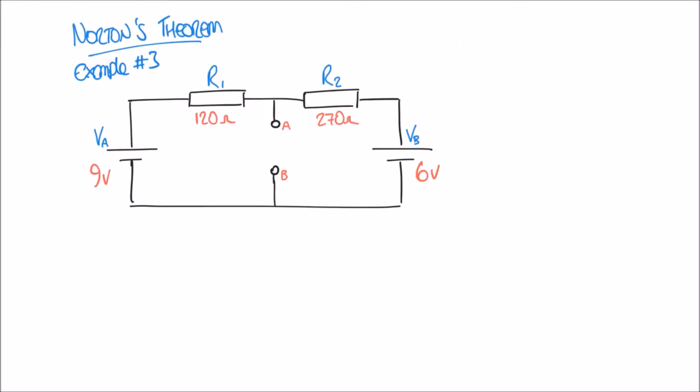In this third and final video on Norton's Theorem, we're going to look at one more example of how we can use the theorem to simplify circuits. The example before us is slightly more complicated by the fact that we now have two power supplies in the circuit, and our output terminals A and B are now in the centre of the circuit.